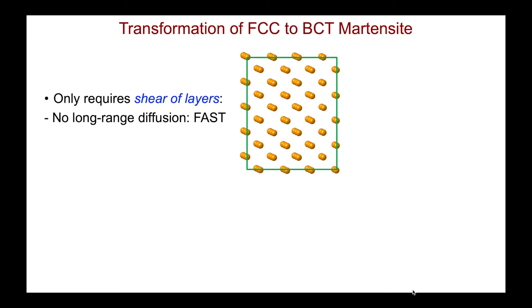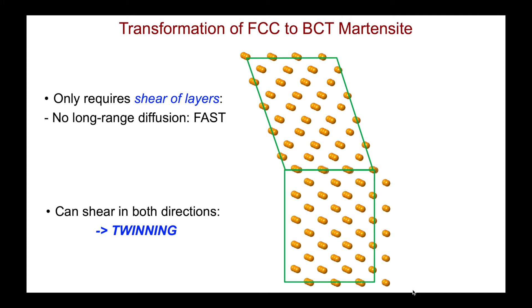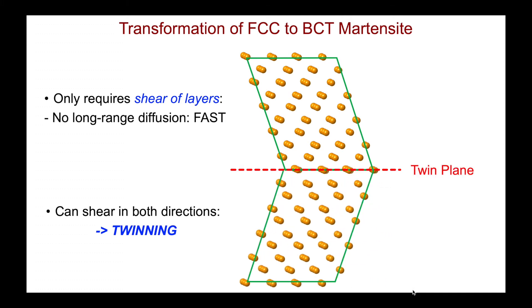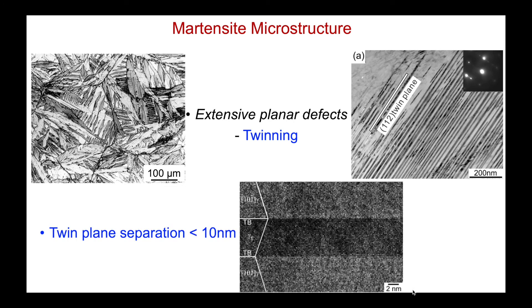Let's highlight the speed and ease of the transition by shearing the FCC layers in real time. It is fast. We sheared the structure to the right, but there is no reason why it could not also shear to the left — in fact, it can shear in both directions. When it does, we get twinning and the formation of twin planes. These are experimental images of the microstructure of martensite, providing clear evidence for this mechanism and the associated twinning. The grains contain numerous planar defects associated with the twin planes, and the frequency of twinning is even more evident in an atomistic image where the separation of the twin planes is on the order of just 10 nanometers.